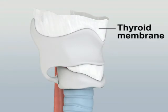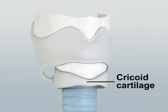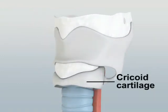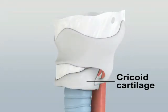Superior to the thyroid cartilage and connecting it to the hyoid bone is the thyroid membrane. The cricoid cartilage forms the inferior border of the cricothyroid membrane and is the only completely circumferential cartilaginous structure of the larynx.